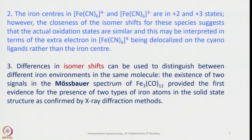In another example, hexacyanoferrate(4−) and hexacyanoferrate(3−) have iron in +2 and +3 states respectively. However, the closeness of isomer shifts for these species suggests that the actual oxidation states are similar. This may be interpreted in terms of the extra electron in Fe(CN)₆⁴⁻ being localized onto the cyano ligands rather than sitting on the iron center. This vital information comes from Mössbauer spectroscopy.